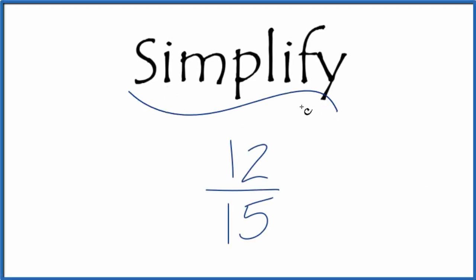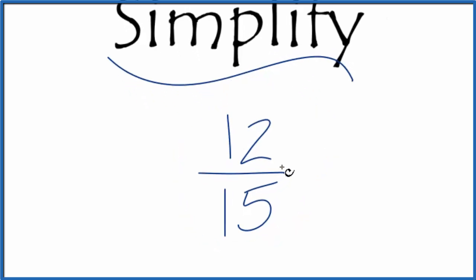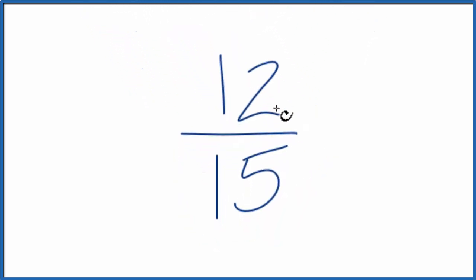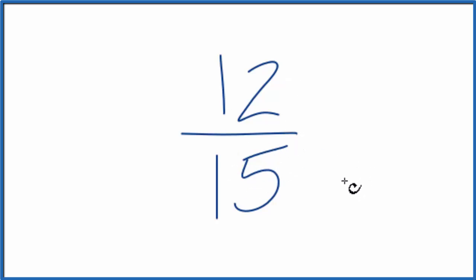If you need to simplify the fraction 12 fifteenths, here's how you do it. We're trying to find another fraction that's equivalent to 12 fifteenths — the same value, but in lowest terms. What we need to do is find a common factor, something that goes into both 12 and 15 evenly.